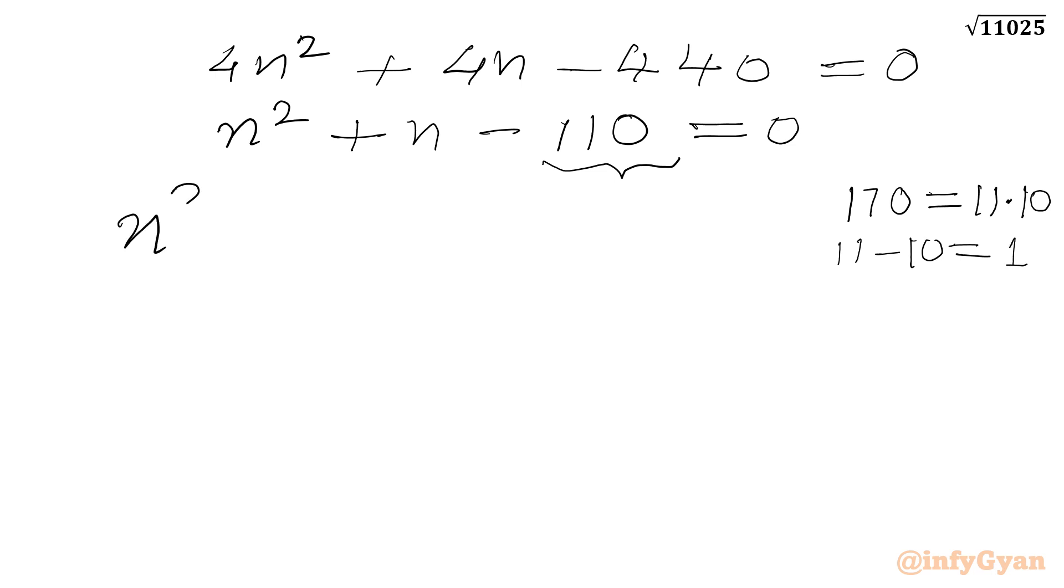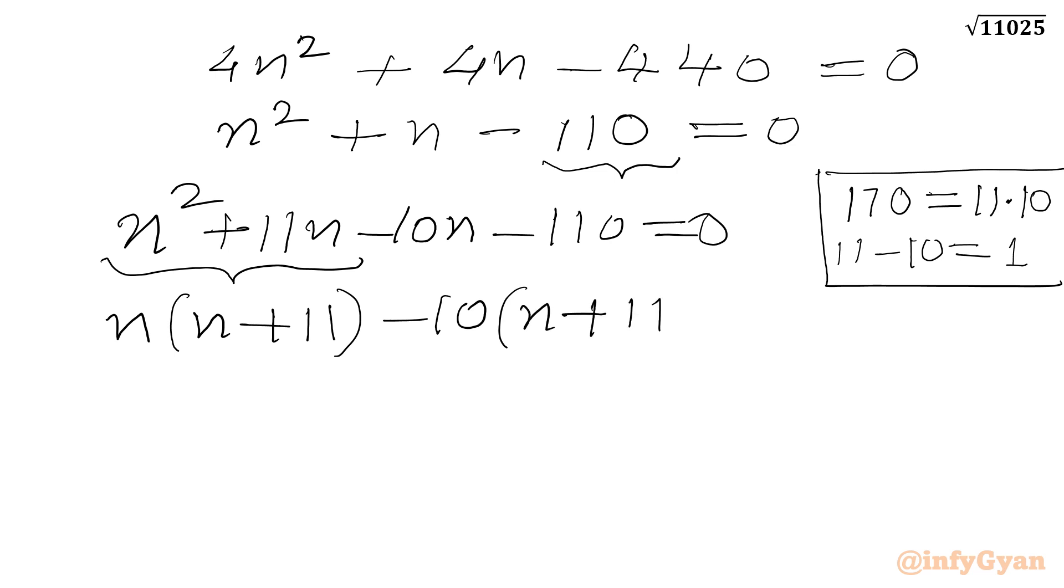So now we can split 1n as 11n minus 10n. And then minus 110 equal to 0. Now I will take n common from here. So in the bracket n plus 11. And minus 10 common from last two terms. I will get the same bracket n plus 11 equal to 0.